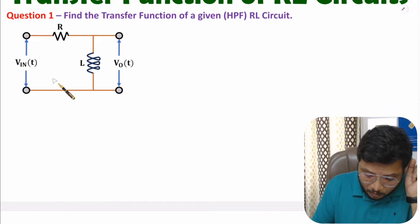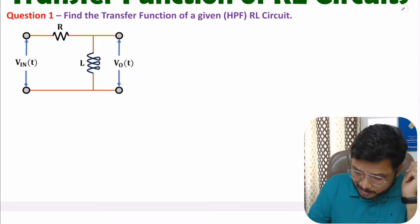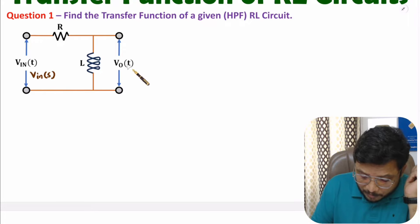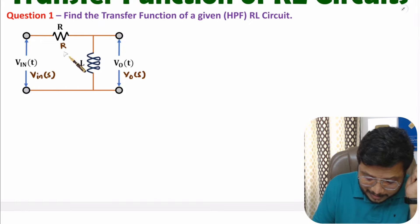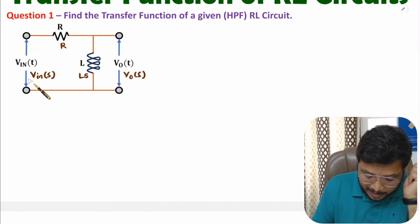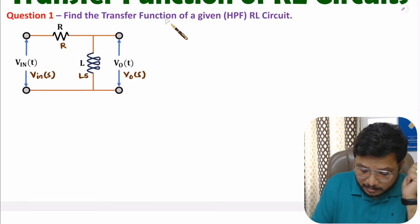To find the transfer function, first we need to convert all elements into the frequency domain — here I will use the Laplace domain. In the Laplace domain, input Vin(t) is represented as Vin(s), output Vo(t) is represented as Vo(s), resistance R remains as R, and the impedance of inductor L becomes Ls.